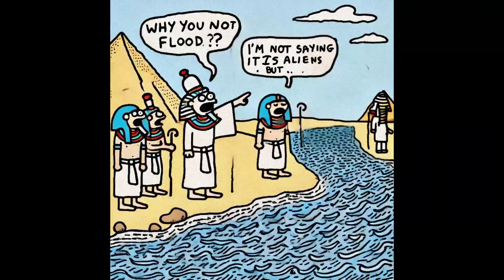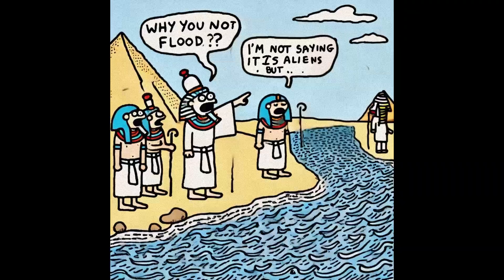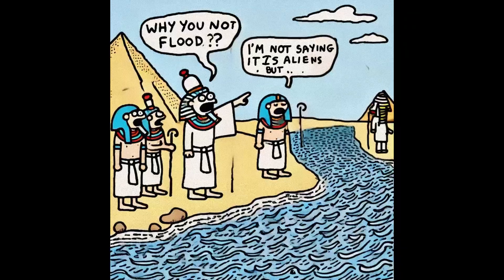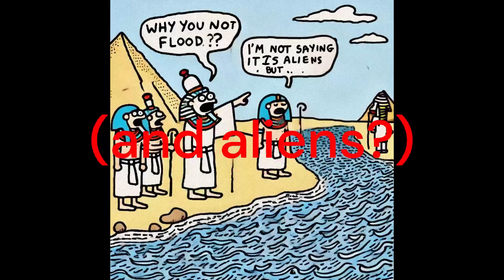Even though environmental determinism can lead to increased legibility for procedural generation of worlds, you also have to recognize that it's a theoretical framework that tends to simplify complex interplays of factors that shape cultures and civilizations — attributing disproportionate emphasis to environmental conditions like climate, geography, and natural resources. By doing this, it neglects the significant roles of social, political, economic, and technological influences that also drive societal development and change.